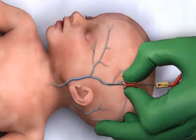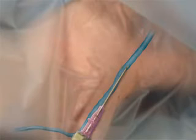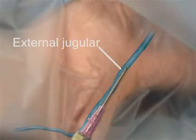Other alternative intravenous cannulation sites include scalp veins, used in neonates and young infants, and the external jugular vein.